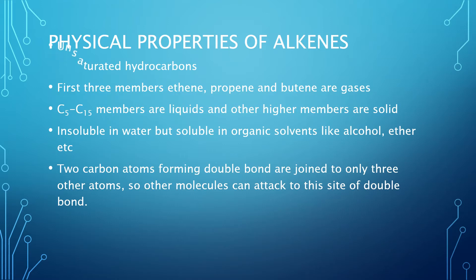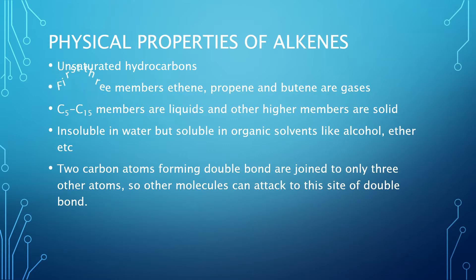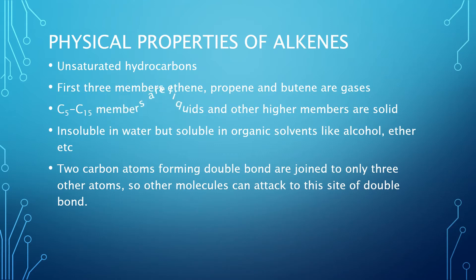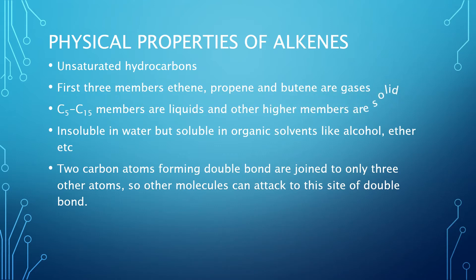As you know, the alkenes have the double bond in them, so the alkenes are unsaturated hydrocarbons. The presence of a double or triple bond indicates that hydrocarbons are unsaturated. The first three members — ethene, propene, and butene — exist in the gaseous state. Members from C5 to C15 exist in the liquid state, and higher members exist in the solid state.